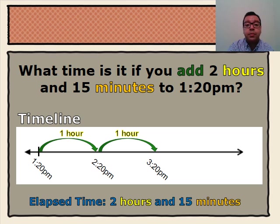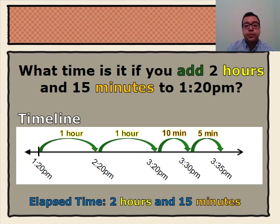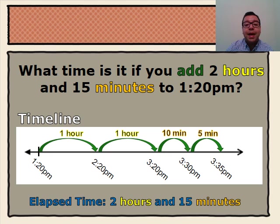Now, we'll need to add our minutes. We've broken up our 15 minutes into 10 minutes and 5 minutes. So, where we left off at 3:20 p.m., we add 10 minutes to get to 3:30 p.m., and then add 5 more minutes to get us to 3:35 p.m.